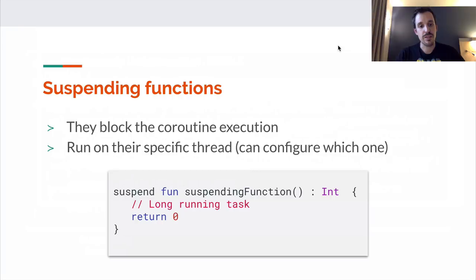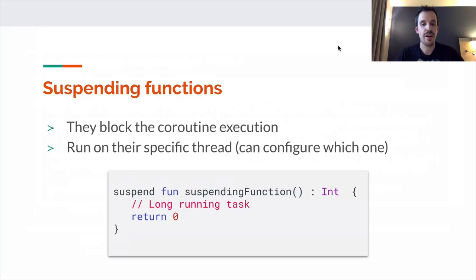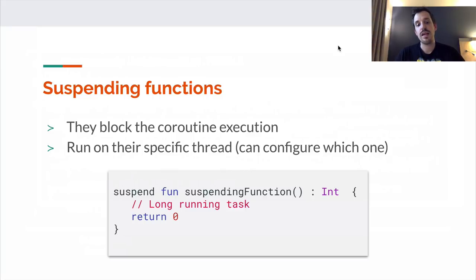So what are suspending functions? We saw that they block the coroutine execution and they can run on their specific thread — we can configure which one, and we'll see later how. The only thing we need to know now is that we need to mark a function with the reserved word 'suspend', and that way we tell the compiler that this function can suspend execution of a coroutine.